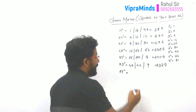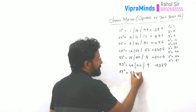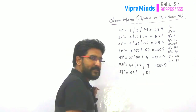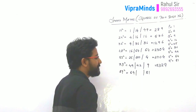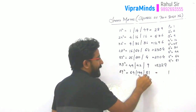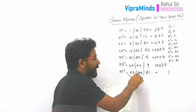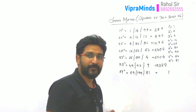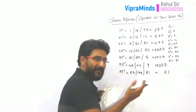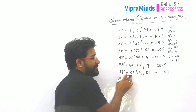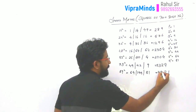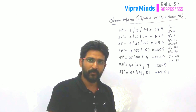Next is 89 squared. 8 squared is 64. 9 squared is 81. 8 into 9 is 72, and the double of 72 is 144. Write 1 as it is and carry forward 8 to the middle block. So 144 plus 8 is 152 — write only the unit place 2 and carry forward 15 to the next compartment. So 15 plus 64 is 79. The answer will be 7921.